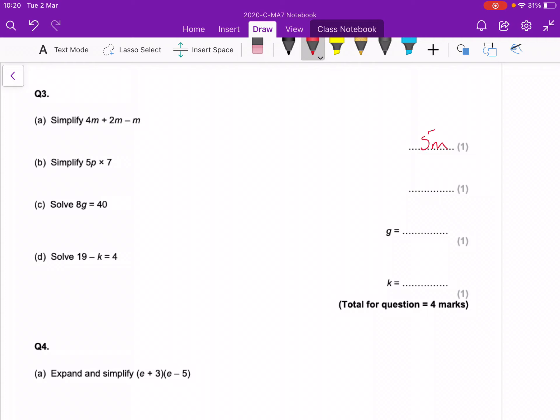The next one. Simplify 5p times 7. So that's like 5 times p times 7. We can put that in any order, so we can do the 7 times 5 times p.